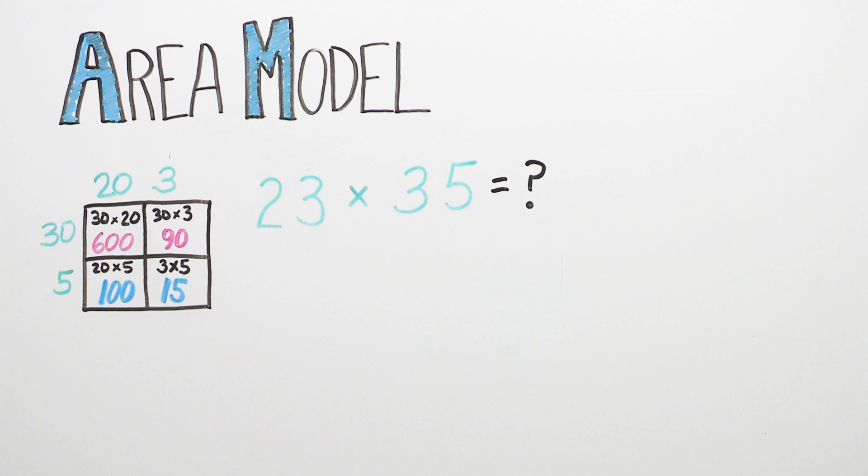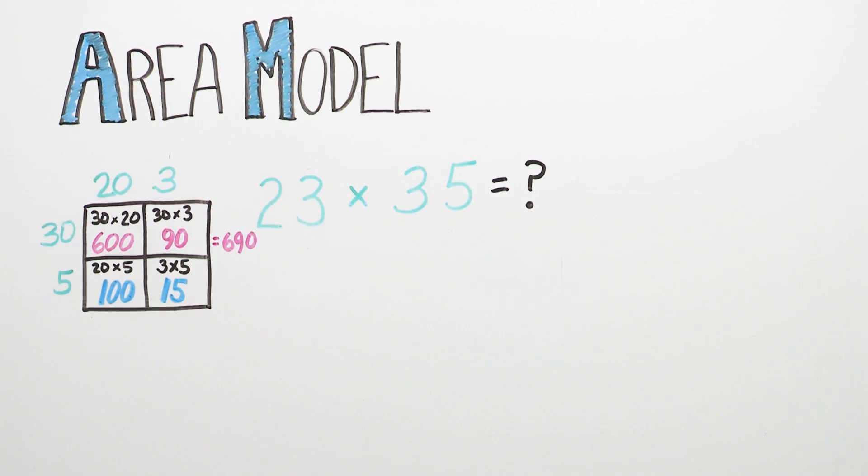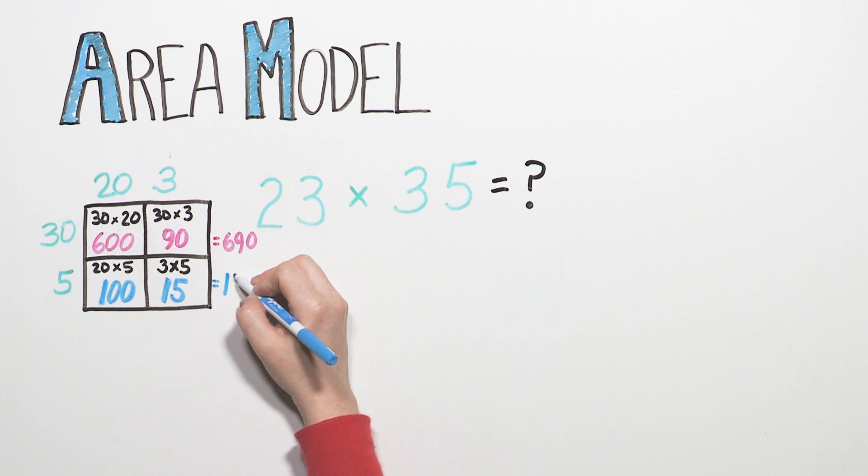Your child will then add these products together. 600 plus 90 equals 690. 100 plus 15 equals 115.